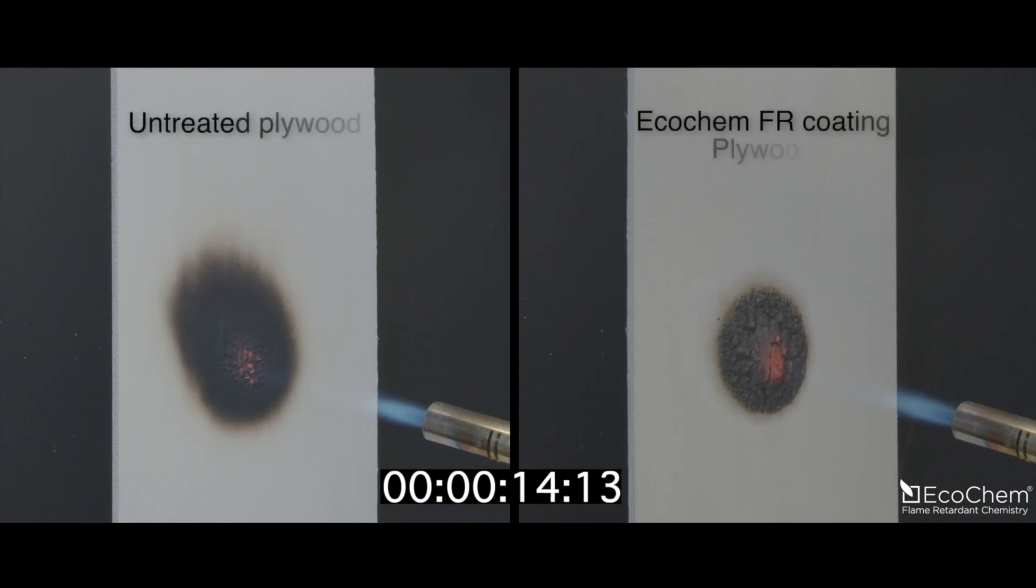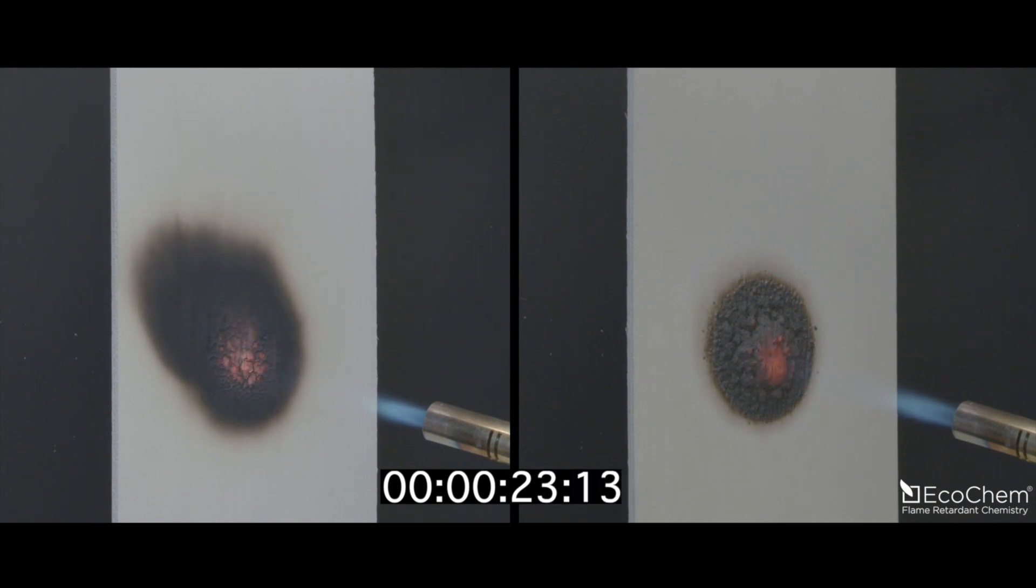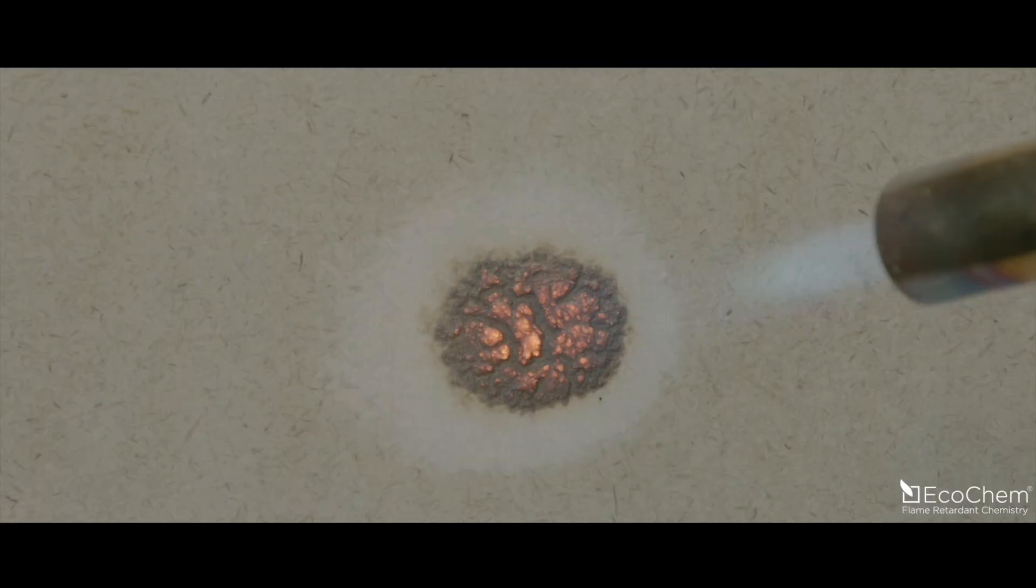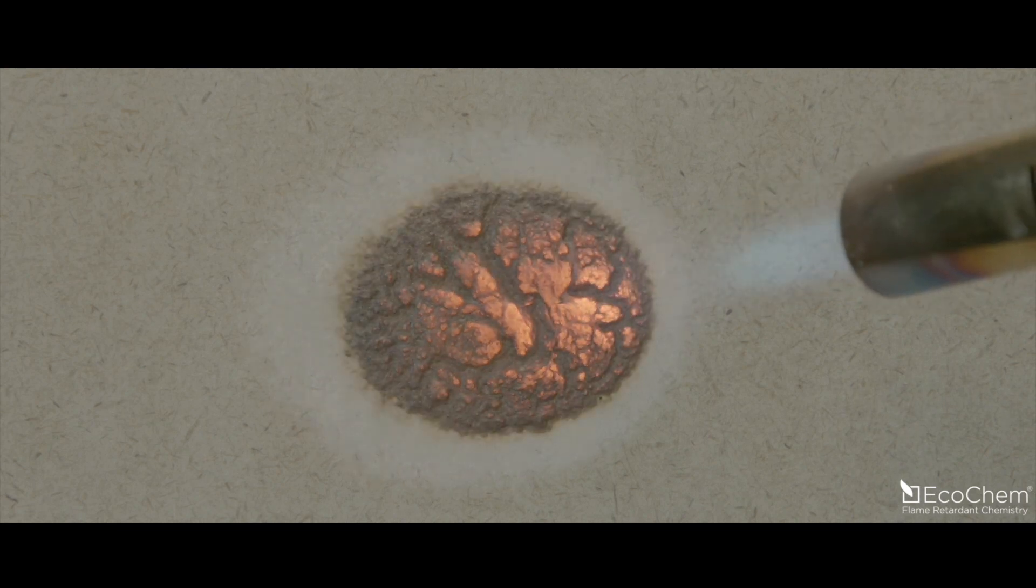On the left, you see the untreated plywood panel. On the right, the same panel with an after-treatment of the Ecochem FR coating. This test illustrates the impressive power of this new technology in the daily fight against fire. The intumescent effect of the protective layer is simply spectacular.